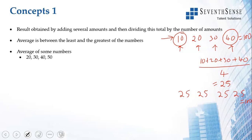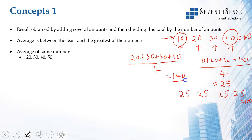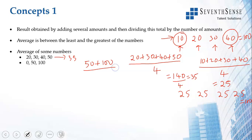Let's look at this quickly. For 20, 30, 40, 50: you add them to get 140, then divide by 4, giving an answer of 35. For 0, 50, and 100: the sum is 150, and you divide by 3 — not 2 — because 0 still counts as a number. So the answer is 150 by 3, which equals 50.